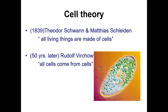Since Hooke discovered cells, many people have contributed to cell theory. In 1839, Theodore Schwann and Matthias Schleiden concluded that all living things must be made of cells. Then, about 50 years later, Rudolf Virchow said that all cells have to come from other cells — you can't just have cells appear out of nowhere; they need to come from another cell.